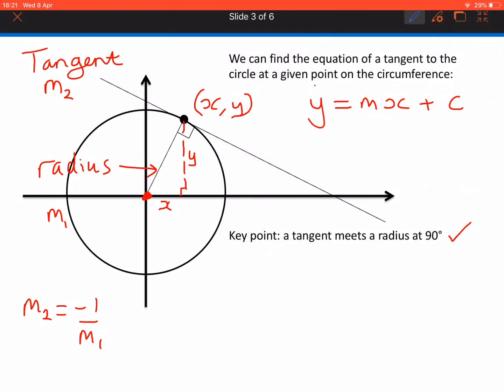Because we've got the y value, the x value, and the gradient of the tangent, the only thing we don't know is c. So we can find c.